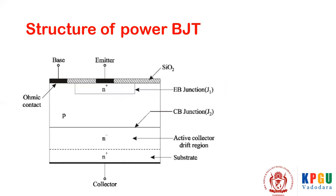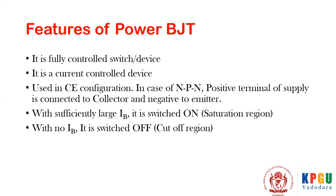This is a vertical structure of the BJT. This vertical structure allows a larger rating. If the cross-sectional area is increased, the current carrying capacity increases. If the N-minus drift region is increased, then the reverse blocking — that is, the voltage handling capacity of the off switch — increases. Here N-plus is the substrate on which all these layers are mounted, and the N-plus emitter region is heavily doped so it injects the carriers.